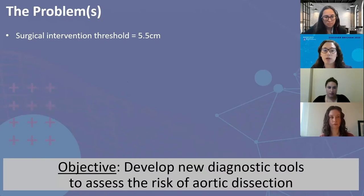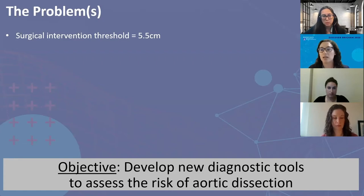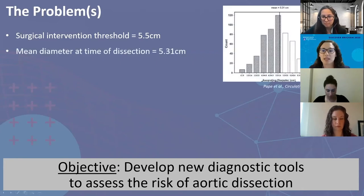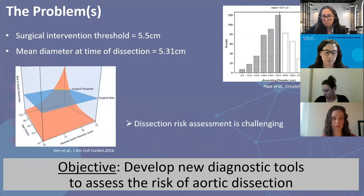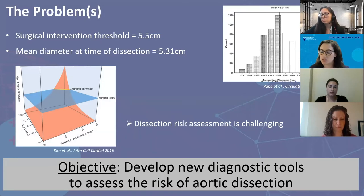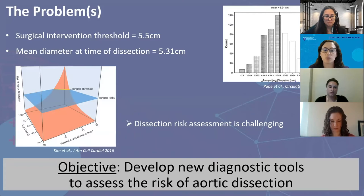The problem currently is that surgical guidelines recommend intervention when the ascending aorta reaches a diameter of 5.5 centimeters, whereas a normal ascending aorta is around 2 to 3 centimeters. However, the mean dissection diameter is 5.31 centimeters — so we have a surgical intervention threshold actually above the mean diameter at time of dissection. Surgeons must constantly decide whether a patient is more at risk of dissection than of surgical complications. The objective of our lab is to develop new diagnostic tools to assess this risk of aortic dissection.